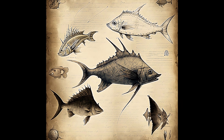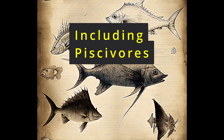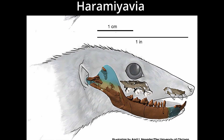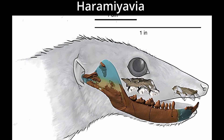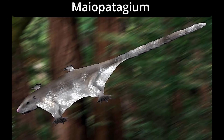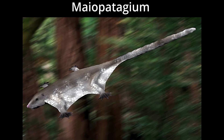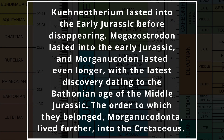However, the Jurassic sees the appearance of the earliest true mammals, and some mammalia-type lines now follow different dietary and ecological paths. Hiramiavia doesn't appear past the Triassic, though the order Hiramiaida lasted through the Jurassic and into the Cretaceous. These creatures were generally herbivorous or omnivorous, and some could climb very well. Some Hiramiaidans adapted to gliding in the Jurassic, such as Vilevolodon, Maopotegeum, and Chienchow. Cuneotherium lasted into the early Jurassic, Megazostradon lasted into the early Jurassic, and Morganucodon lasted even longer, with the latest discovery dating to the Bathonian age of the middle Jurassic.